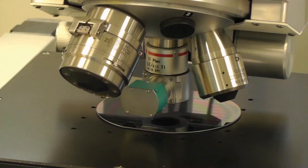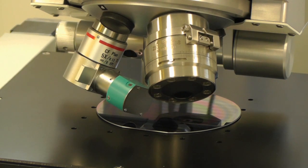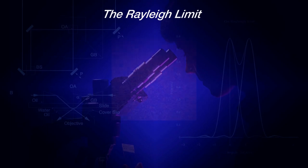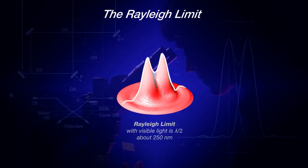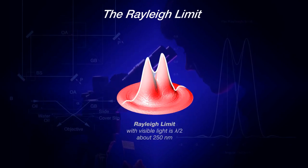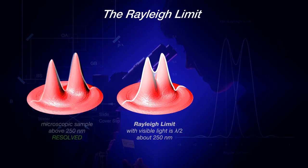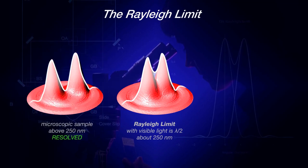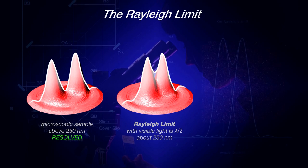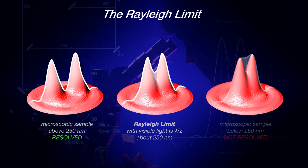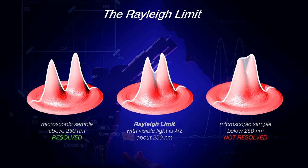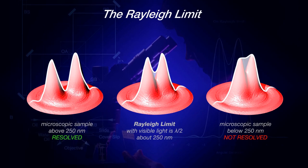Our microscope technology is superb, but optical imaging techniques have reached a barrier set by the laws of physics. This optical barrier is called the Rayleigh limit and is equal to about 250 nanometers. The detail of a microscopic sample can be resolved if it is bigger than that. If it is smaller, the detail cannot be resolved. The image in the microscope is just a blur.